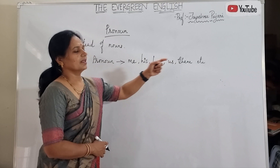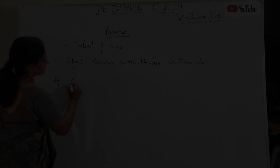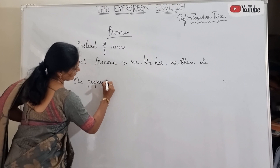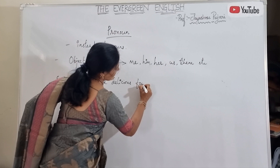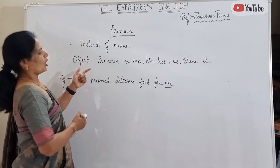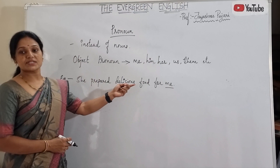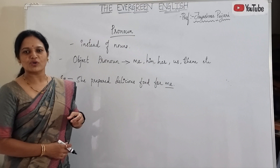When we look at examples: 'She prepared delicious food for me' — here 'me' is the object pronoun. 'She prepared delicious food for him.' 'My mother prepares excellent, delicious, tasty food for us.' Any pronoun which takes the place of an object is called an object pronoun.